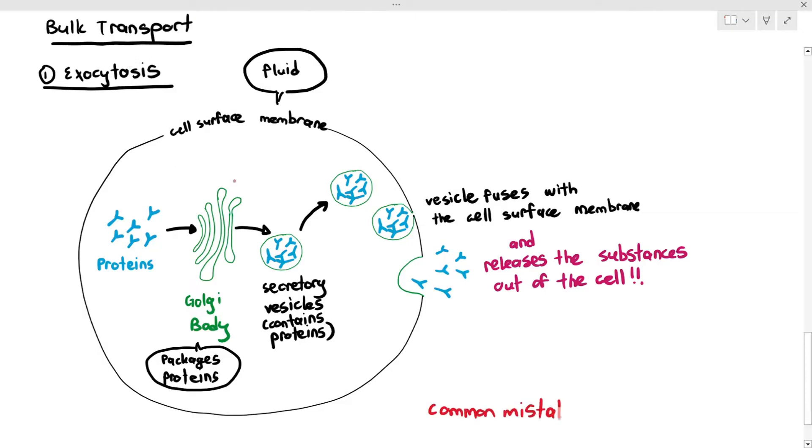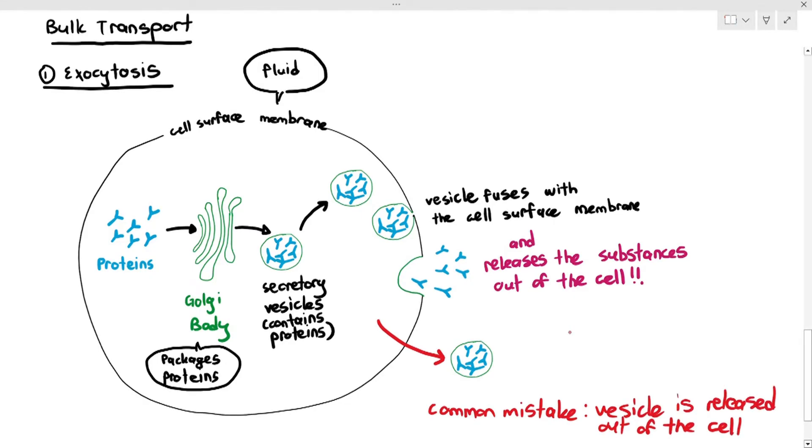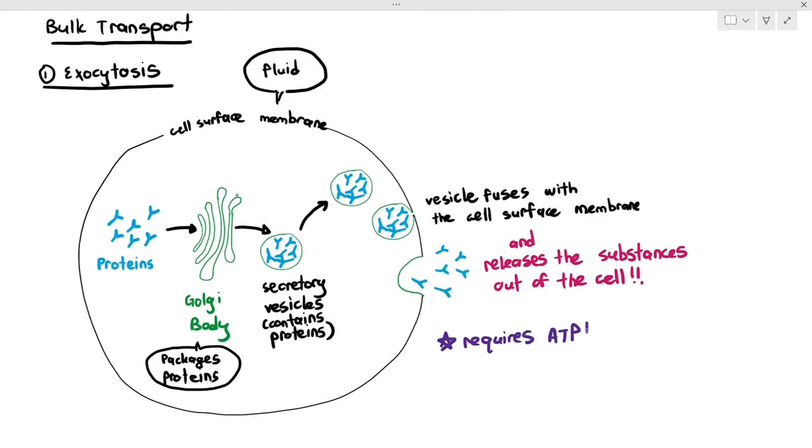Common mistakes that students will say is, the vesicle is released out of the cell. No, that is wrong. The vesicle is not the thing that is released out of the cell. The content of the vesicle was released out of the cell. In this case, the antibodies. So this process is known as exocytosis. And of course, it also requires ATP. This is a very important thing that we have to understand about exocytosis.